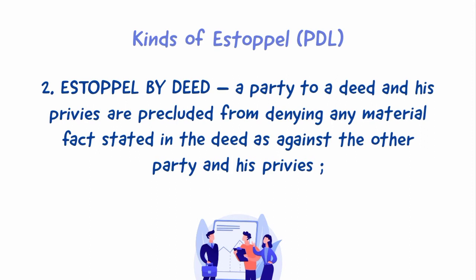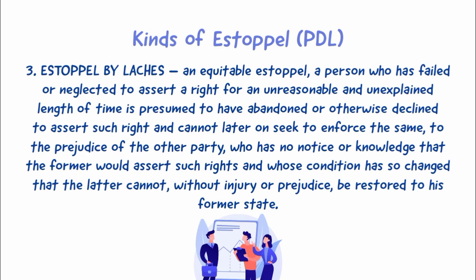2) Estoppel by deed: a party to a deed and his privies are precluded from denying any material fact stated in the deed as against the other party and his privies. 3) Estoppel by laches — an equitable estoppel: a person who has failed or neglected to assert a right for an unreasonable and unexplained length of time is presumed to have abandoned or otherwise declined to assert such right, and cannot later on seek to enforce the same to the prejudice of the other party who has no notice or knowledge that the former would assert such rights, and whose condition has so changed that the latter cannot without injury or prejudice be restored to his former state.